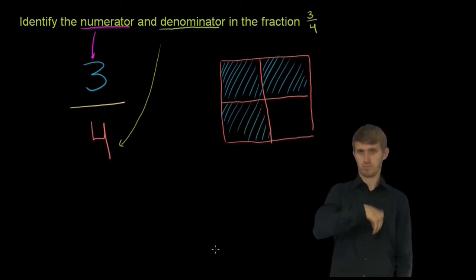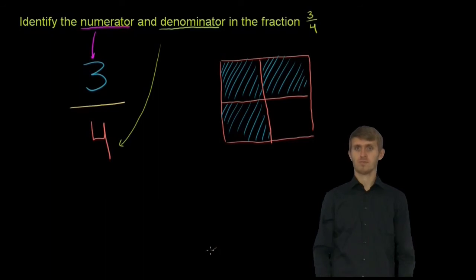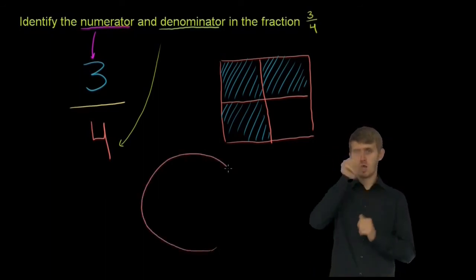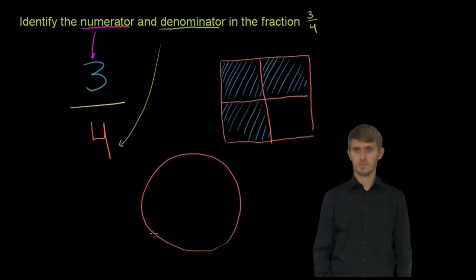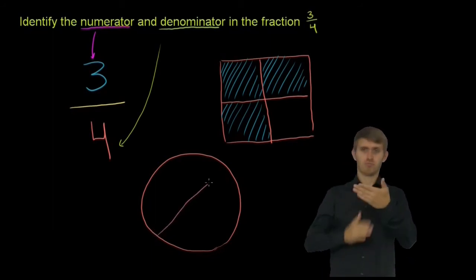If we imagine a round pie, it would look like this. Let me draw a round pie. So that is my round pie. Let me cut it into 4 equal pieces, or roughly equal pieces.